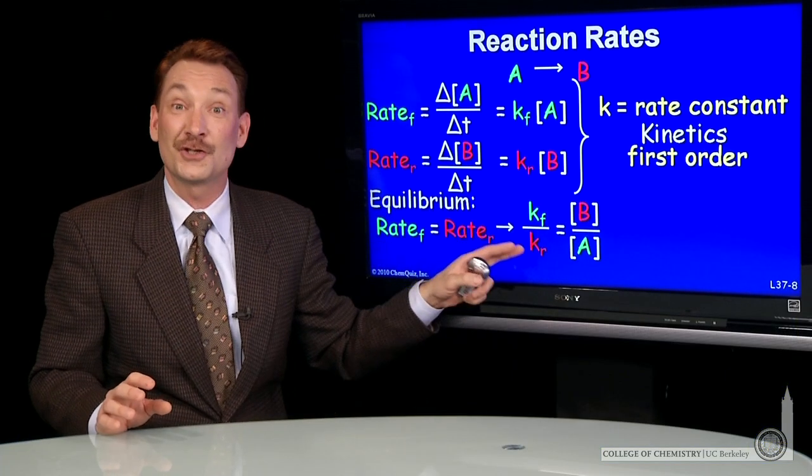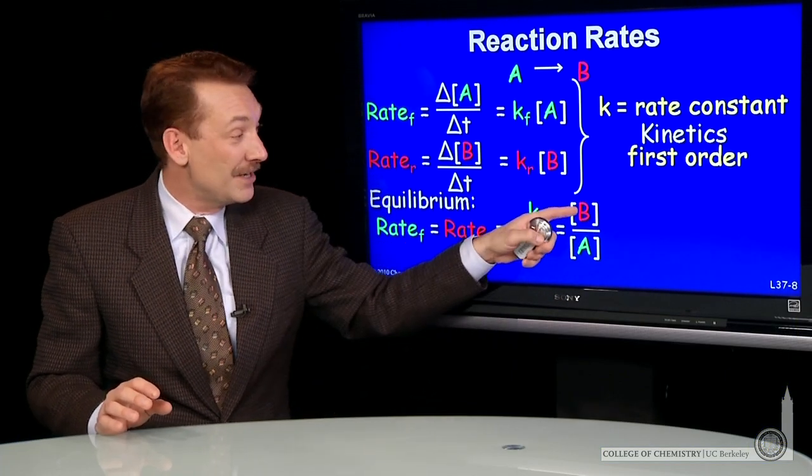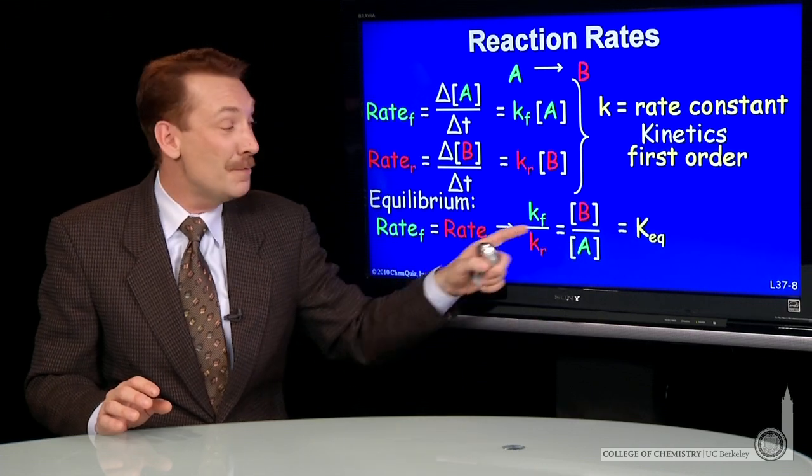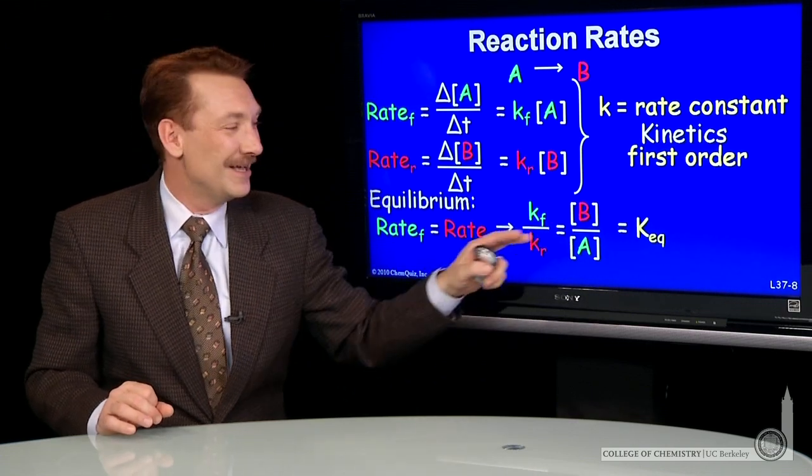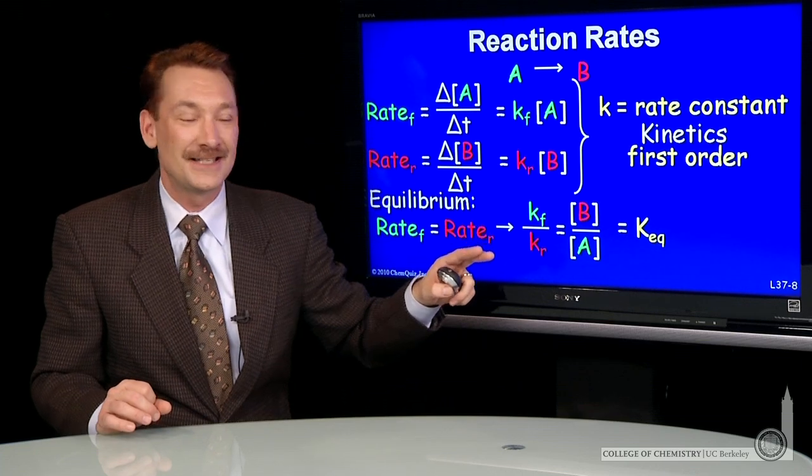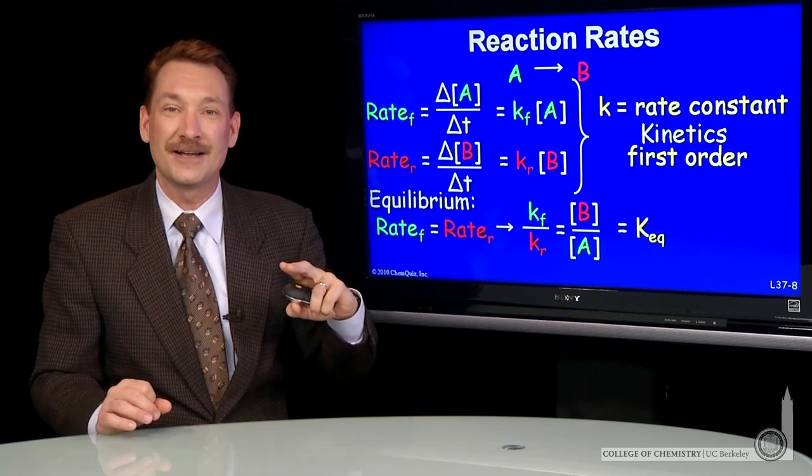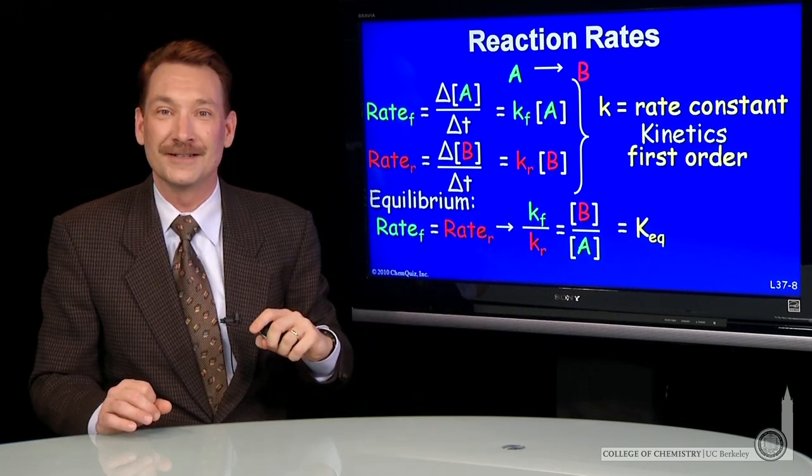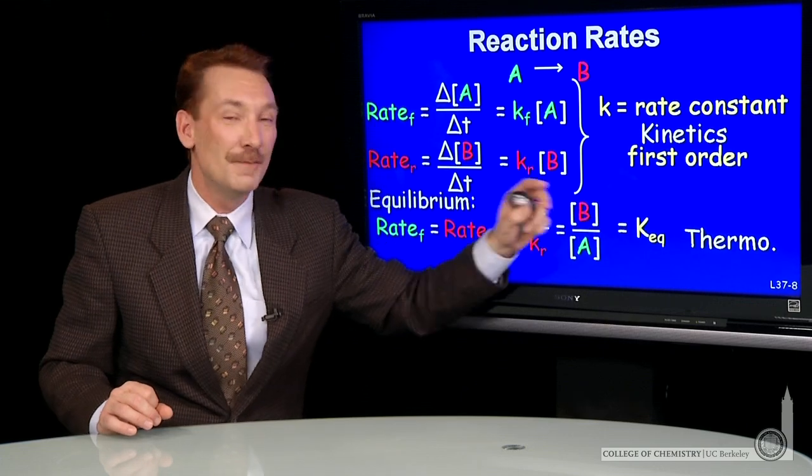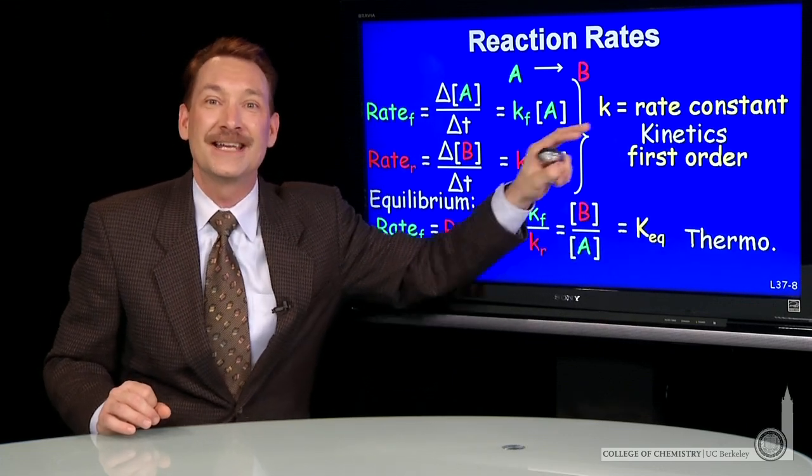Now, these aren't the rates. These are just the rate constants. And when the A and B reach equilibrium, this is the equilibrium constant. So the equilibrium constant is given by the forward rate constant over the reverse rate constant. So here we have a link between thermodynamics and kinetics for an elementary chemical reaction.